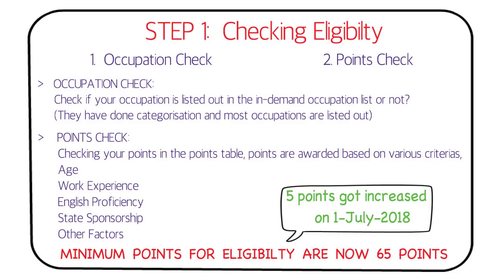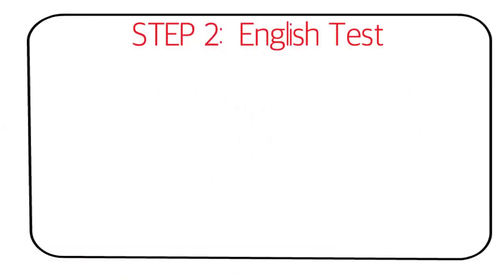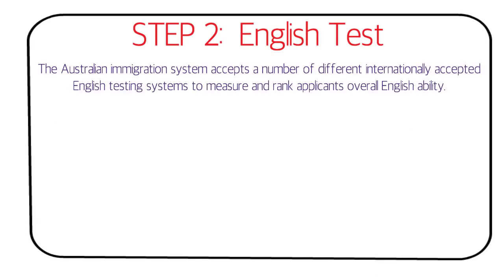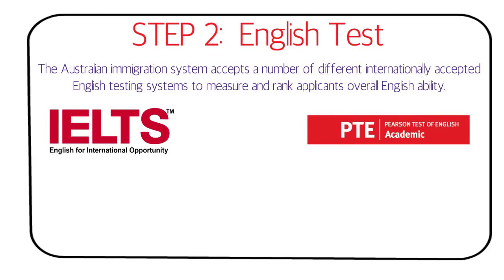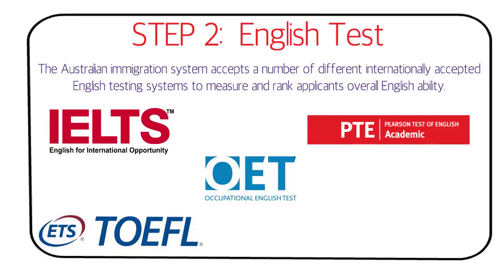Step two is the English test. The Australian immigration system accepts several internationally recognized English tests to measure applicants' overall English ability. You can appear for IELTS, PTE Academic, OET (Occupational English Test), TOEFL iBT, or Cambridge Assessment English (CAE). Based on your score, you'll be awarded points and ranked in the queue.